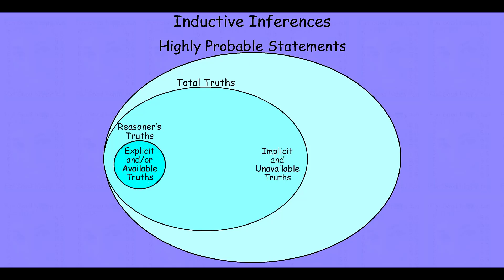When we look inside that circle of total truths, we see the reasoner's explicit and available information that they can use in their inductive and deductive inferential transformations. Deduction operates by transforming some of that explicit and available information to generate explicit and available representations of information that isn't explicit and available before that inference, but that is guaranteed to be true given the explicit and available information the reasoner already has.